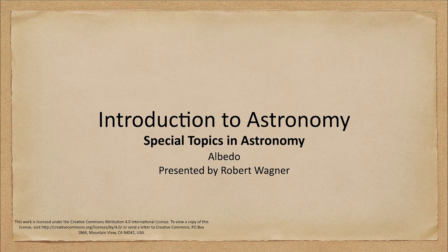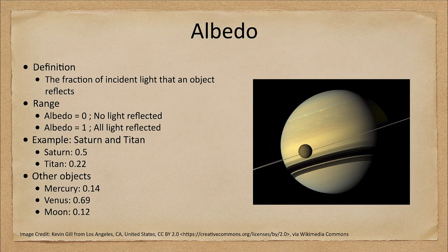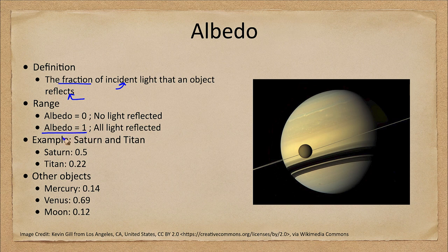So what do we mean by albedo? The albedo of an object is by definition the fraction of the incident light that an object reflects. Some objects would be very bright and would have a very high albedo. The maximum an albedo can be would be one, meaning it's reflecting all of the light that's incident on it.